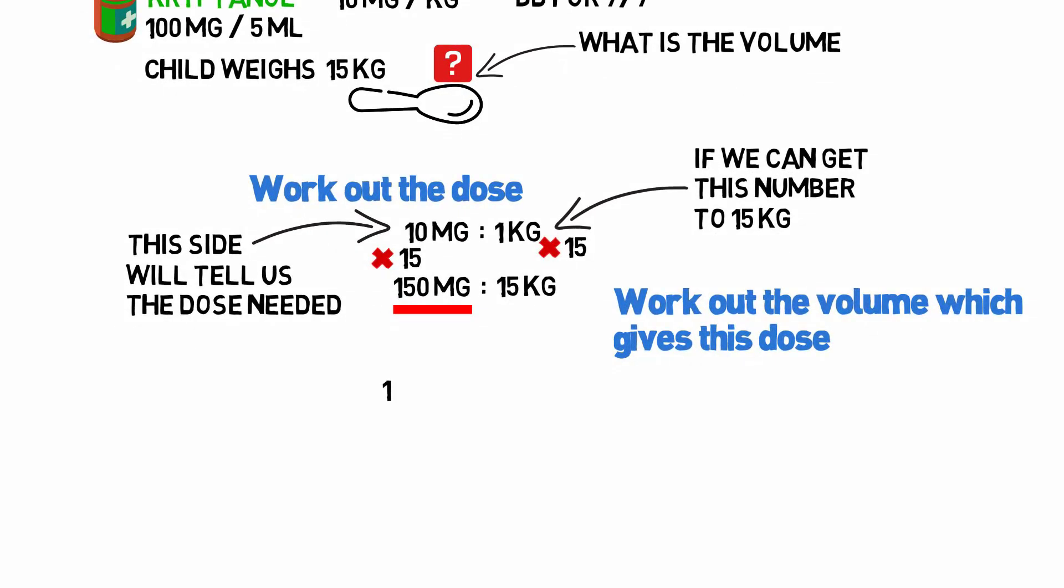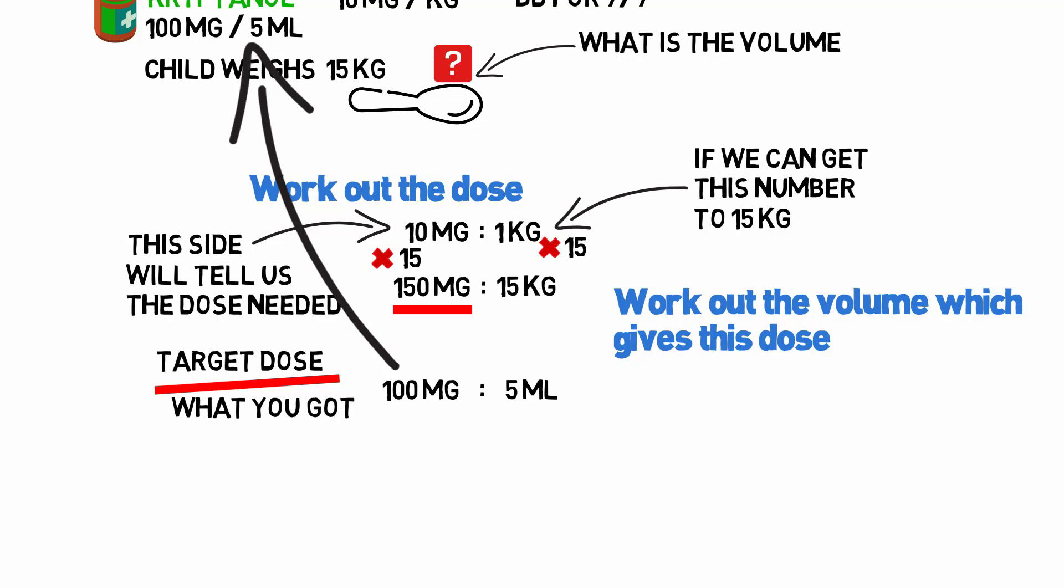Now we have to work out the volume which actually gives this dose. So we know the cryptonol comes in 100 milligrams per 5 mils. So we write the target dose divided by what you got. So 150 milligrams is a target divided by what you've got, which is 100 milligrams, which equals 1.5. And you multiply this by the 5 mils, which makes 7.5 mils, which you're going to give BD for seven days.